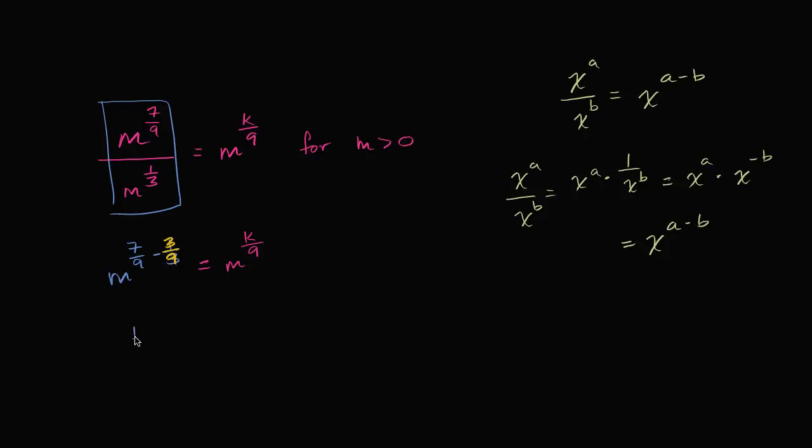So this is the same thing as m to the 4/9th power is going to be equal to m to the k/9th power. So 4/9th must be the same thing as k/9th. So we can say 4/9th is equal to k/9th, 4 over 9 is equal to k over 9, which tells us that k must be equal to 4. And we're all done.